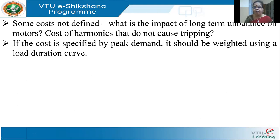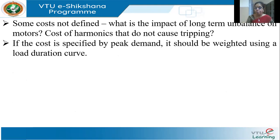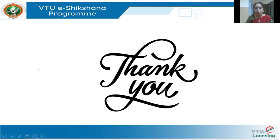Some costs cannot be defined. For example, there is a small amount of unbalance, and this unbalance will have an effect on the vibration of a motor which may lead to a bearing failure — how do I calculate that cost? Harmonics may be within the permitted range but they may cause damage — we don't know. So these are some of the issues in power quality for distribution planning. We need sophisticated costing tools and modeling tools to simulate and decide on what is the cost of power quality. In fact, this is a very good area of research itself.